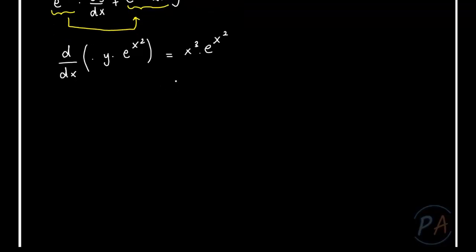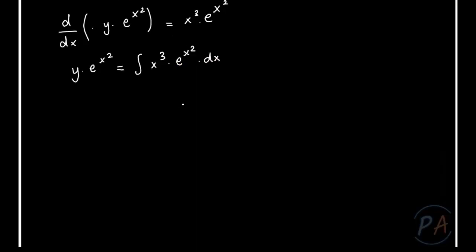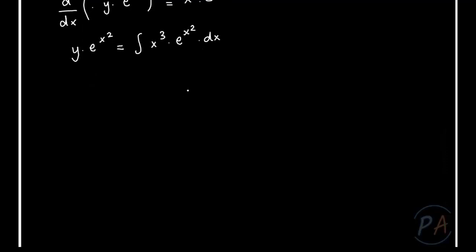We have y times exponential x squared equals x cubed times exponential x squared. Now let's integrate both sides of the equation. The left-hand side gives y times exponential x squared, and the right-hand side is the integral of x cubed times exponential x squared dx.